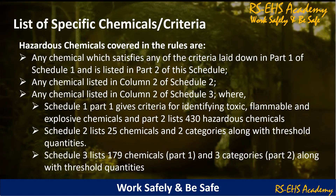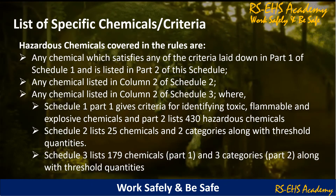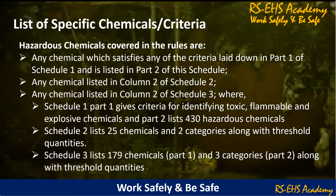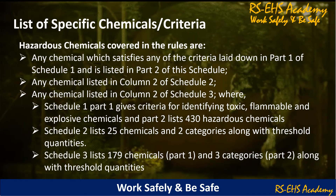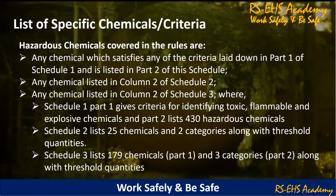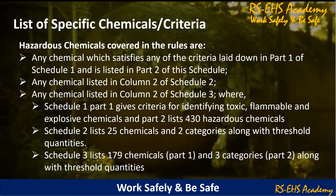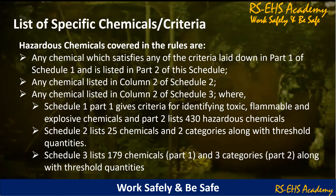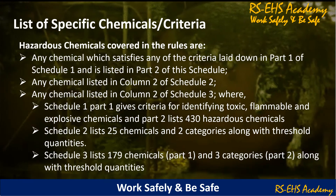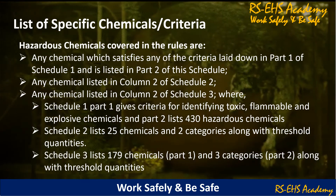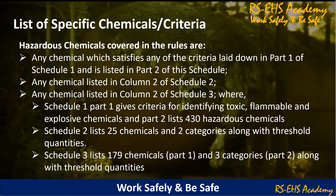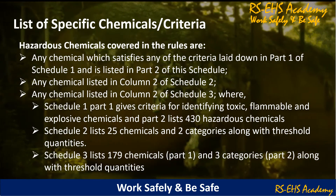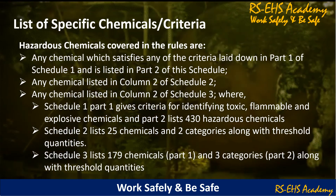Schedule 1, Part 1 gives criteria for identifying toxic, flammable, and explosive chemicals, and Part 2 lists 430 hazardous chemicals. Schedule 2 lists 25 chemicals and 2 categories along with threshold quantities.